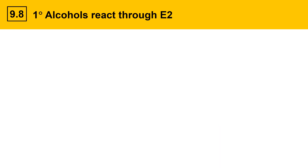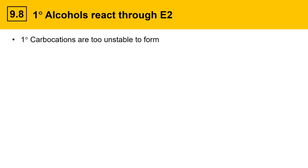Primary alcohols react through E2. The E2 reaction was discussed extensively in prior videos in the context of alkyl halides, so you might want to review those. The big thing with primary alcohols is that carbocations are too unstable to form. Here's a primary alcohol — it has an alpha position where the OH group is attached, and this particular alcohol has one beta position with two protons attached.